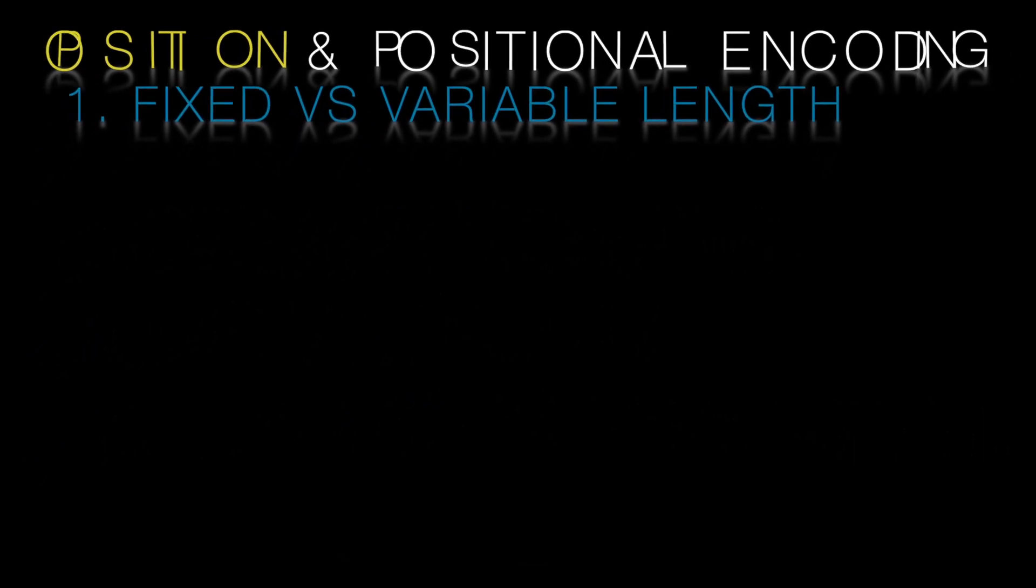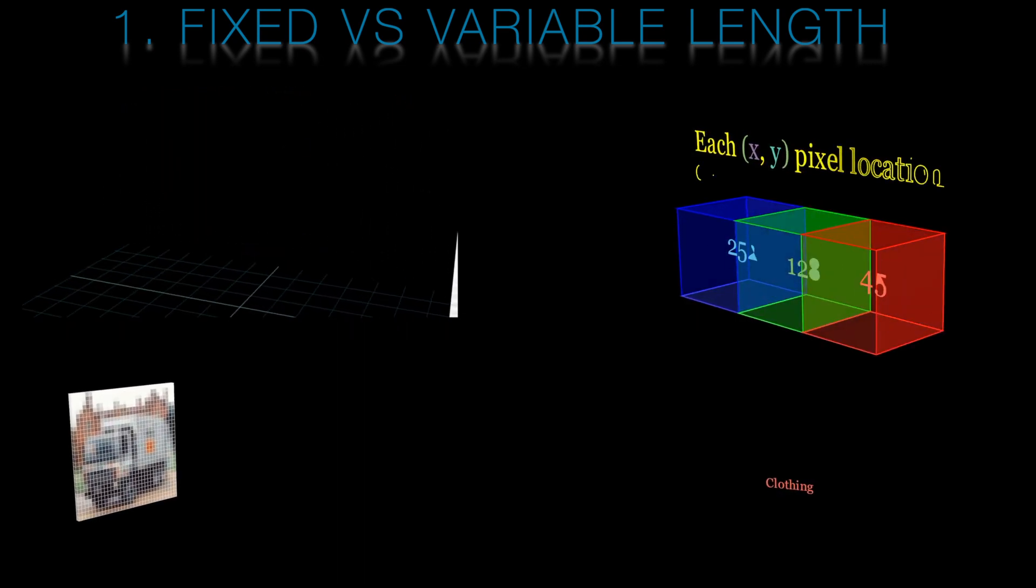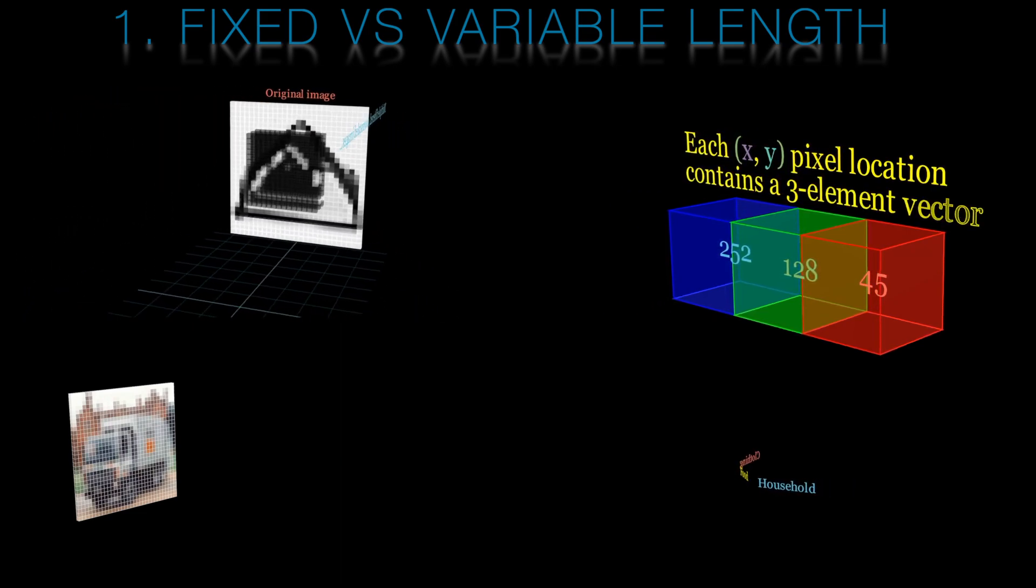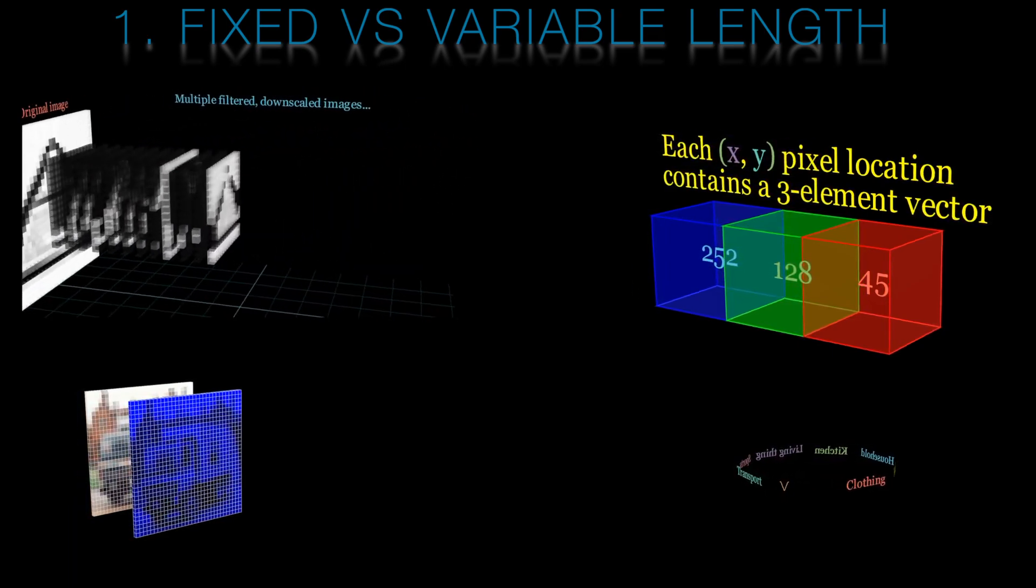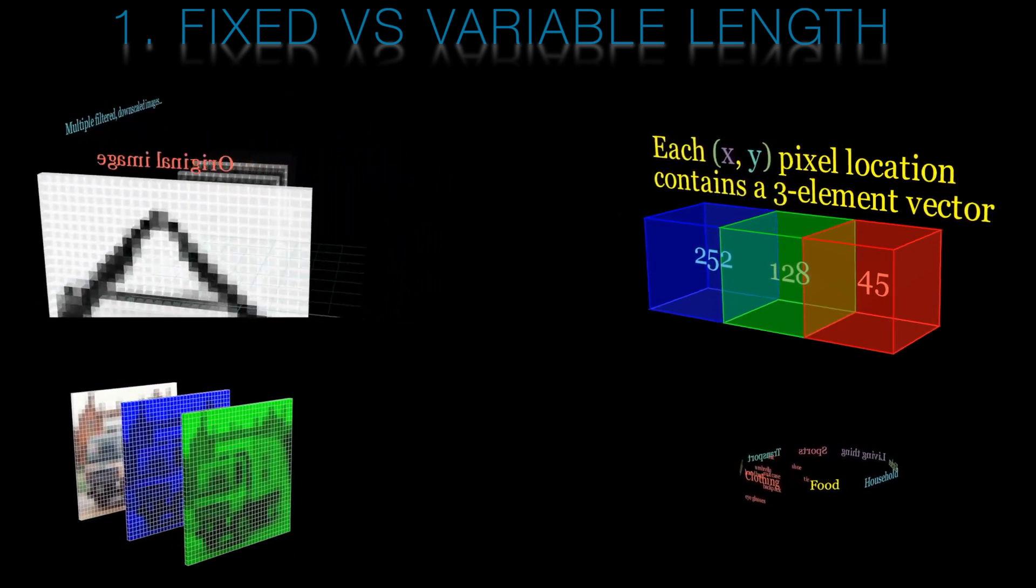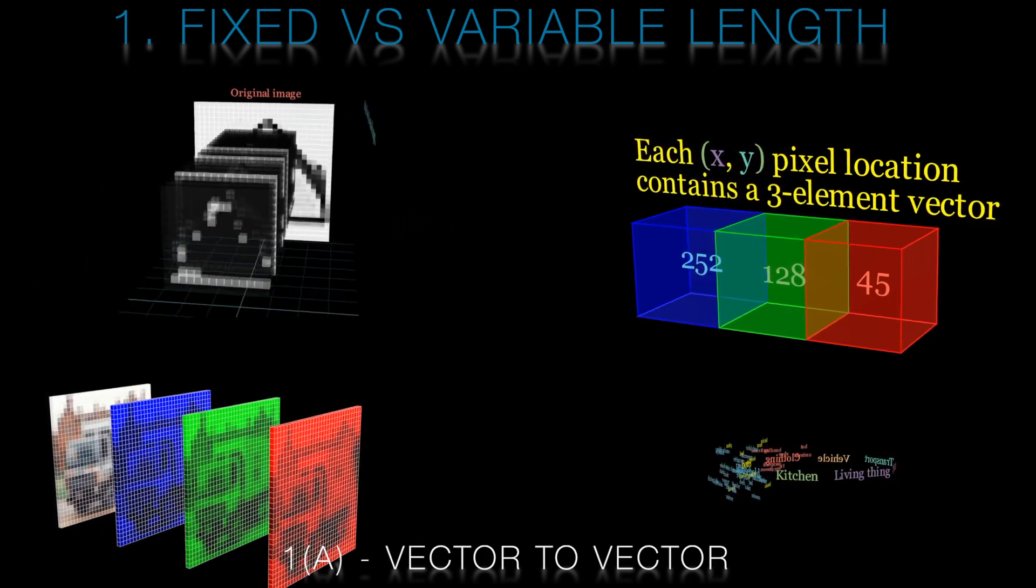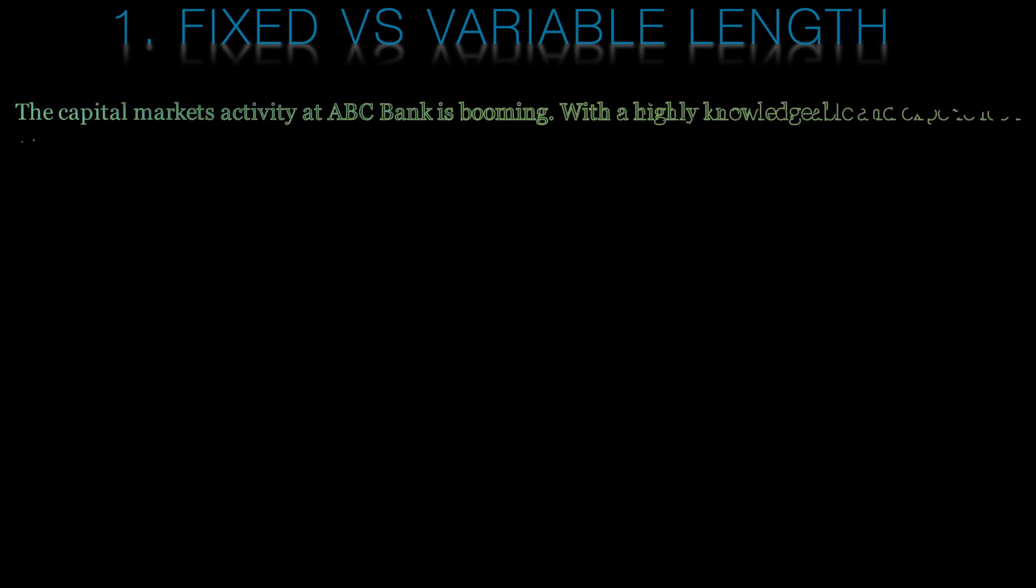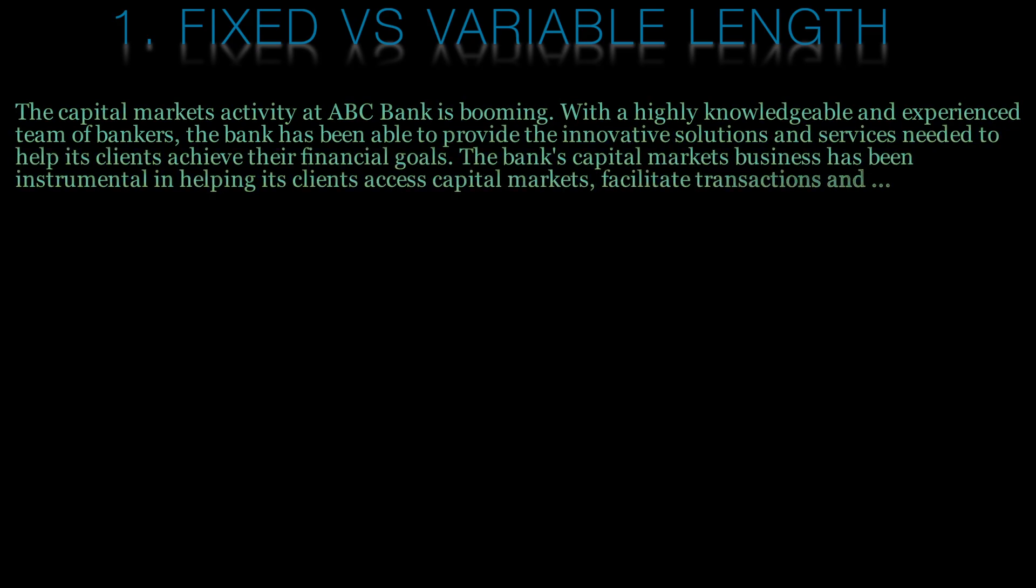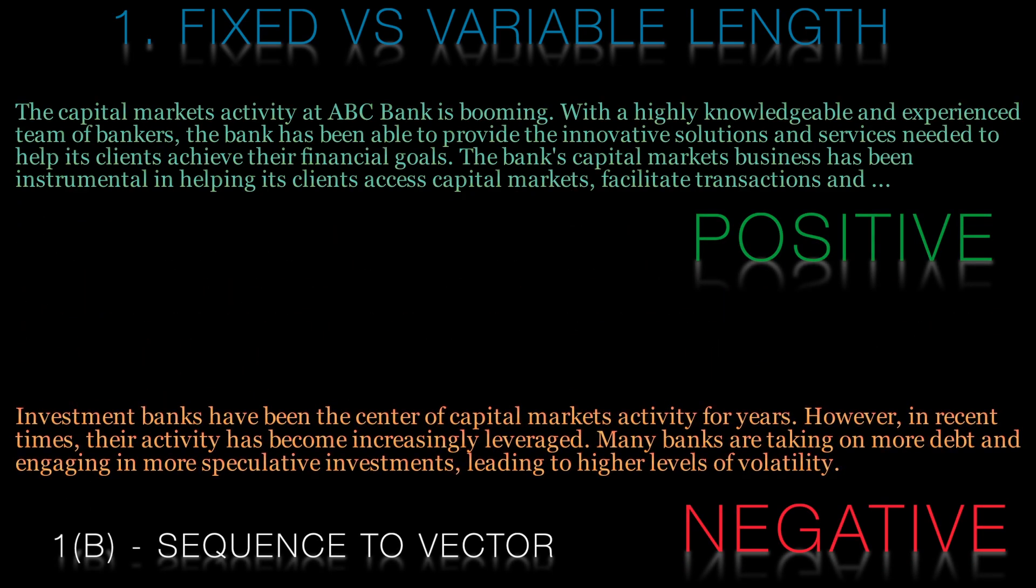Firstly then, let's look at fixed and variable length data. For fields like computer vision, we have fixed length data. We have a camera with a fixed set of pixels, and this is trained to recognize a fixed set of objects. Our input to our AI will always be the same size as will our output. You'll hear this fixed input to fixed output referred to as vector to vector. Now consider sentiment analysis. We want to classify some text as positive, negative, or neutral. Our output is fixed, but our input can be of any length. This is called sequence to vector.